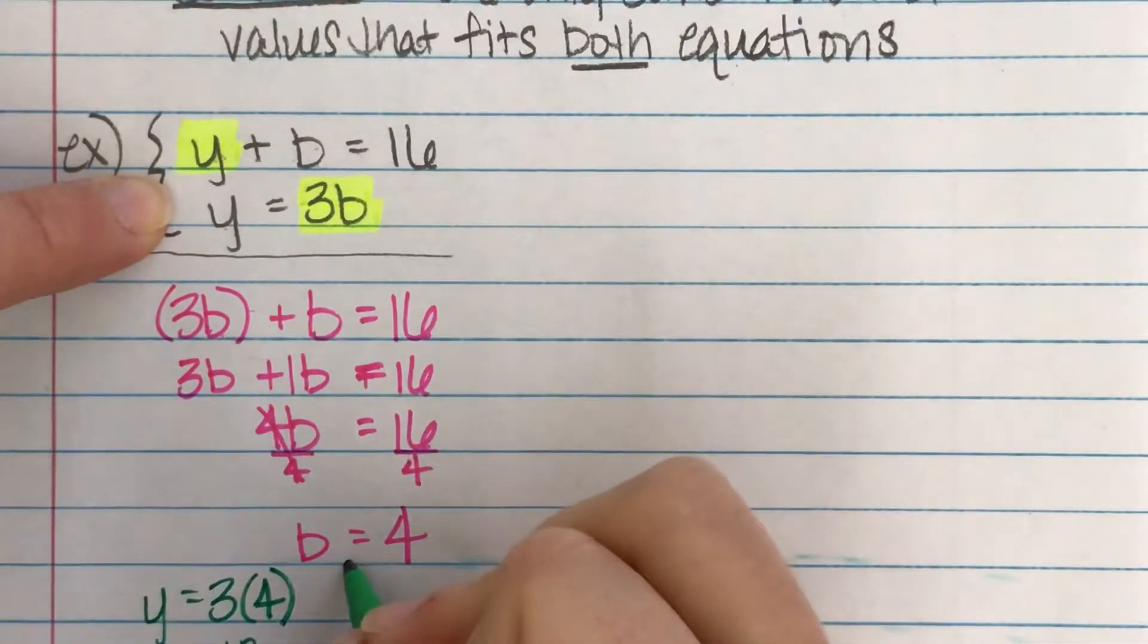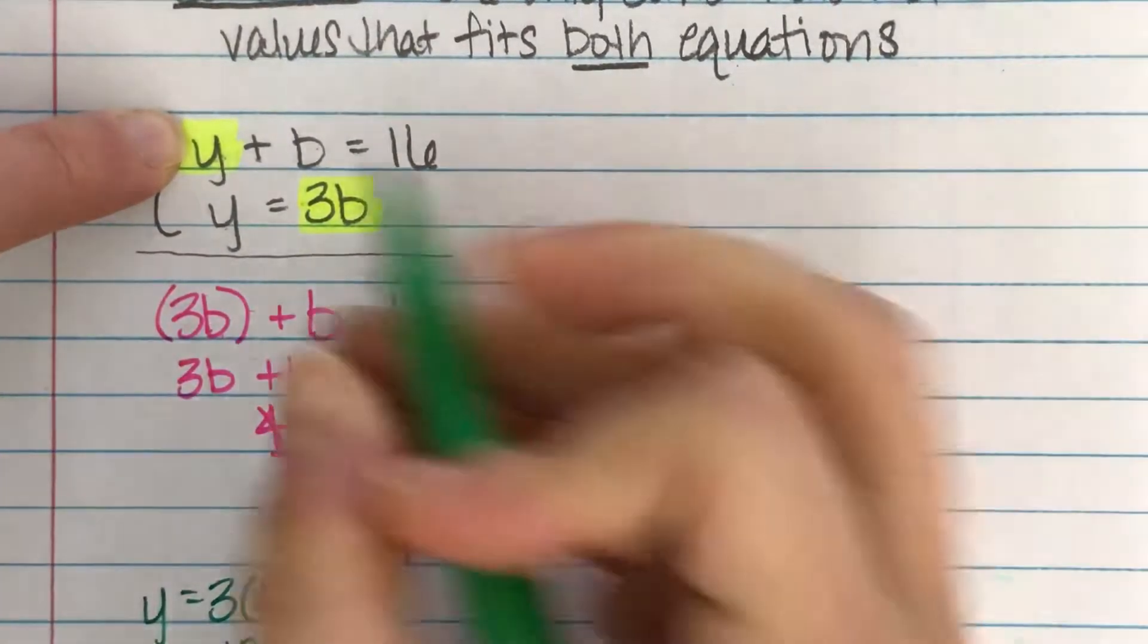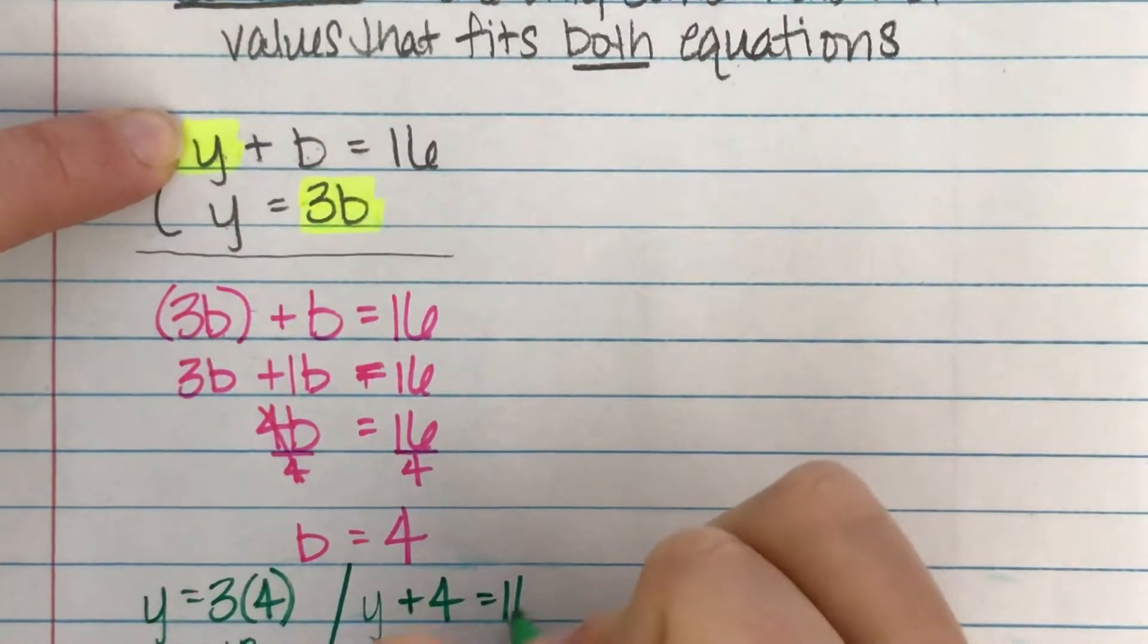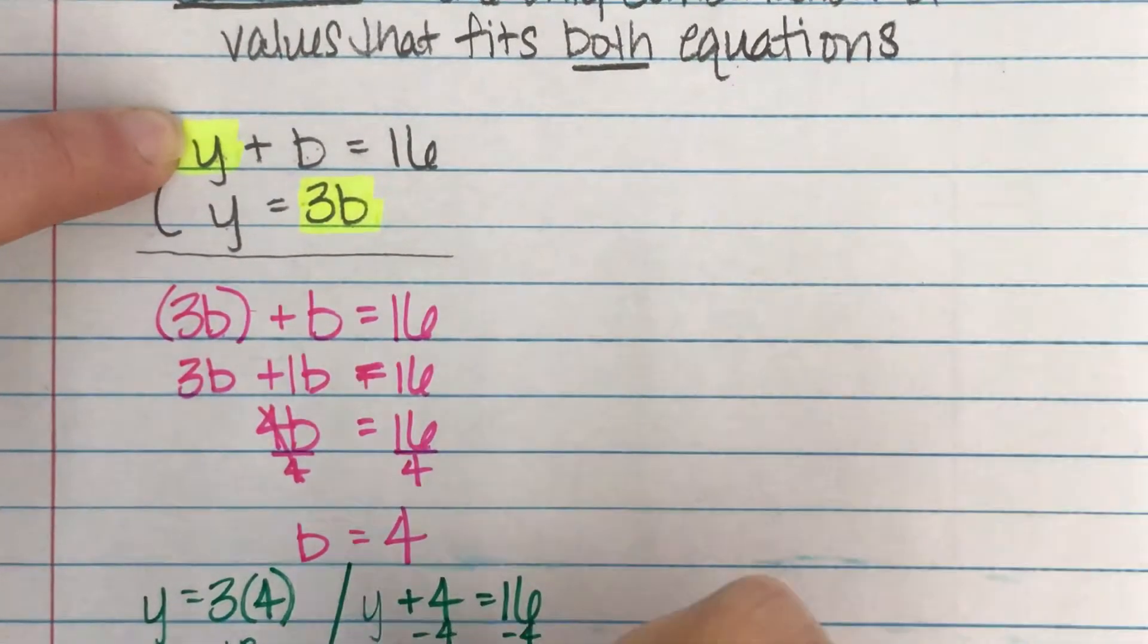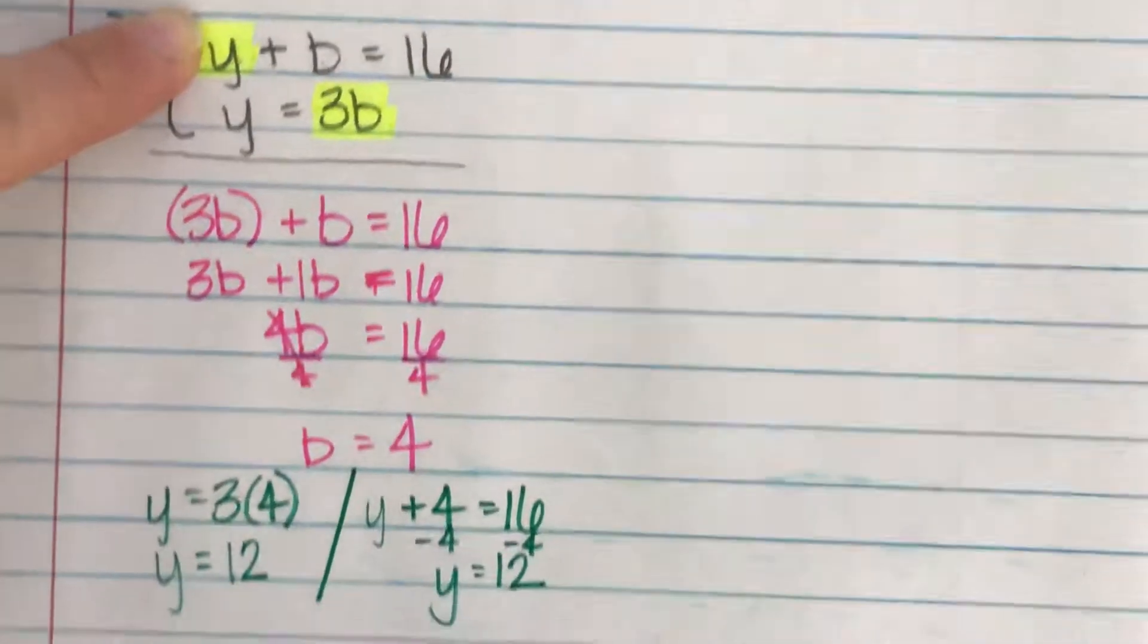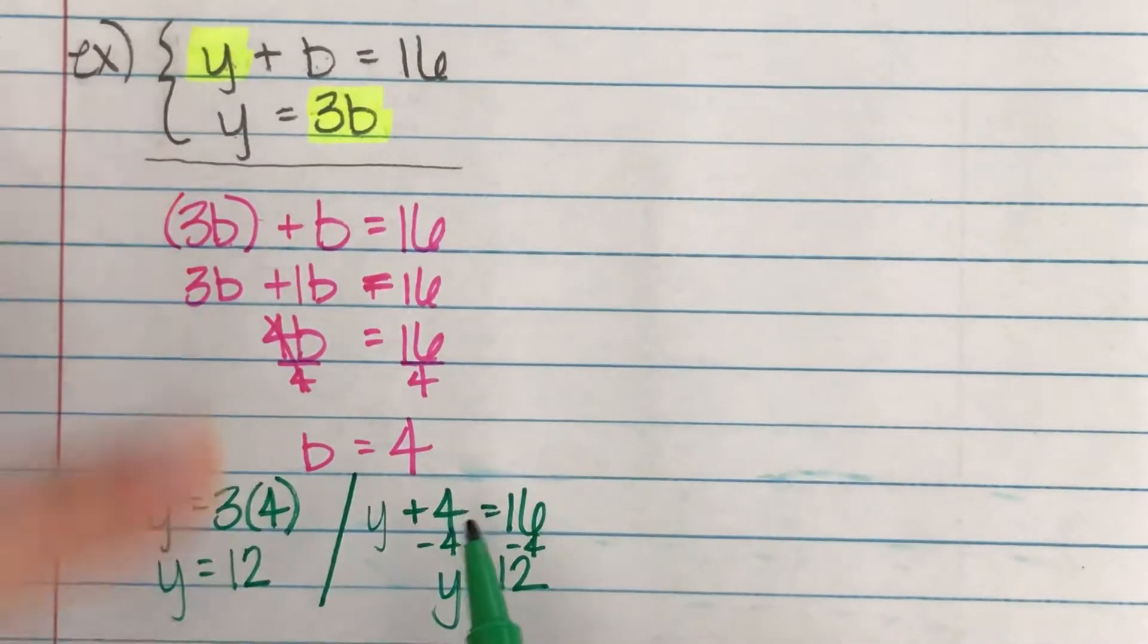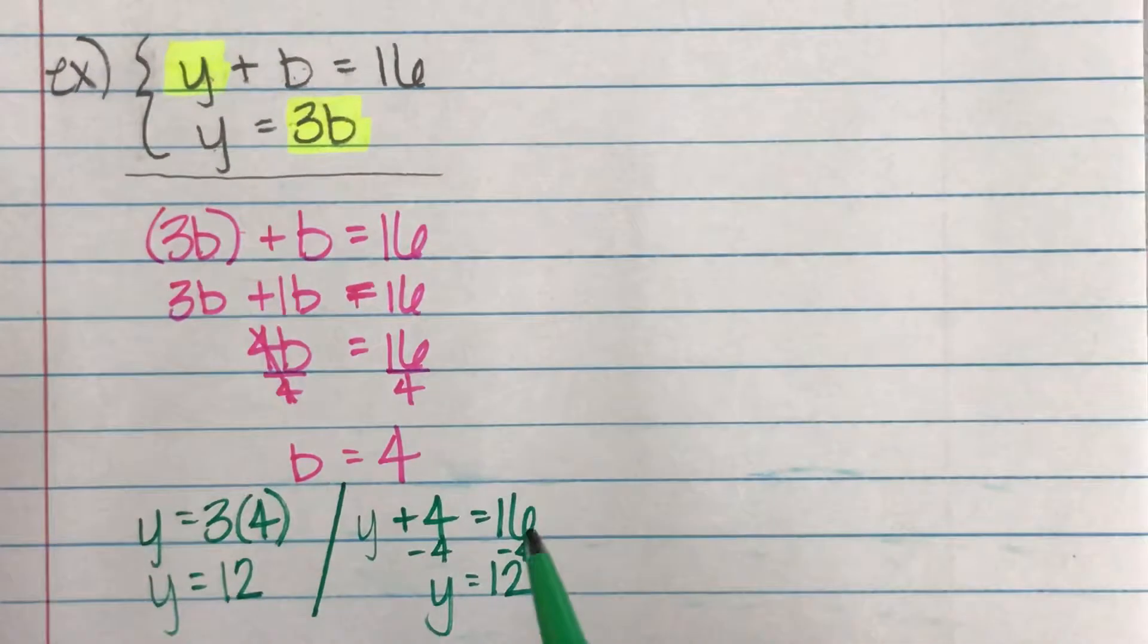At the same time, I could also go to this other equation and say, well, I don't know what yellow is, but I know that blue is now y yellow plus four because blue had to be four has to equal 16. And then if I solve this equation by subtracting that four, I end up with yellow equals 12. I can use either one of these equations and plug in that four where the b was to figure out what yellow has to be. I get the same answer either way.